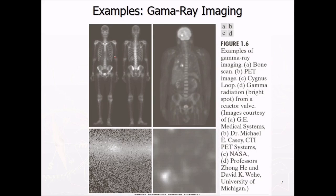These are the examples of gamma ray imaging. These are the bone scan, PT scan, then cygnus loop and this is a gamma radiation for a reactor wall.